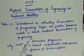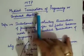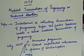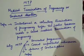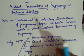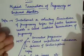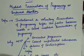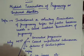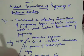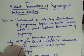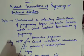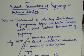What do you mean by MTP? MTP means Medical Termination of Pregnancy, or you can call it induced abortion. We can define it as either intentional or voluntary termination of pregnancy before the fetus becomes viable. In general language, it is the termination of pregnancy in the early phase, whenever there is an unwanted pregnancy or some problem with the mother's health or the fetus's health.